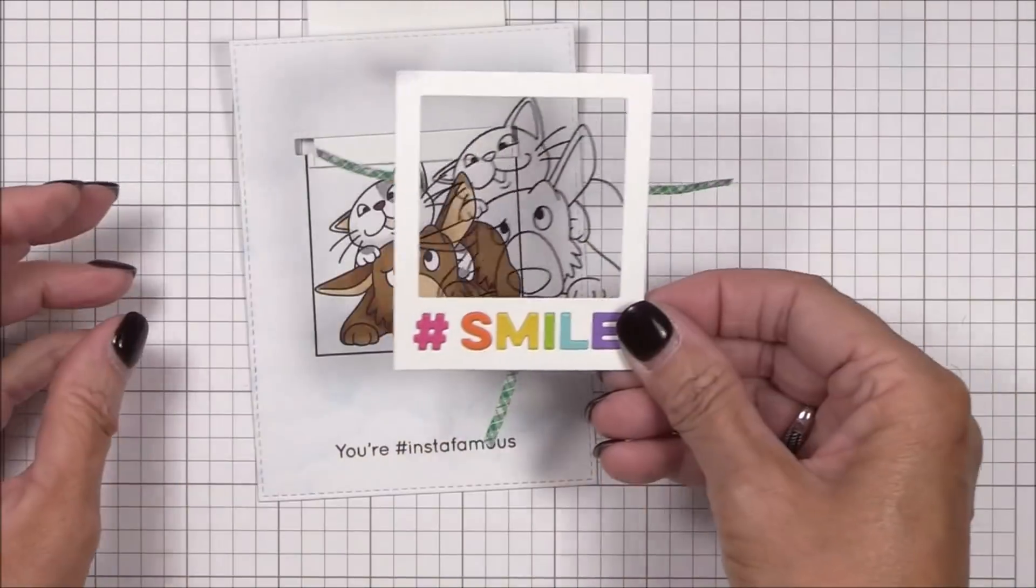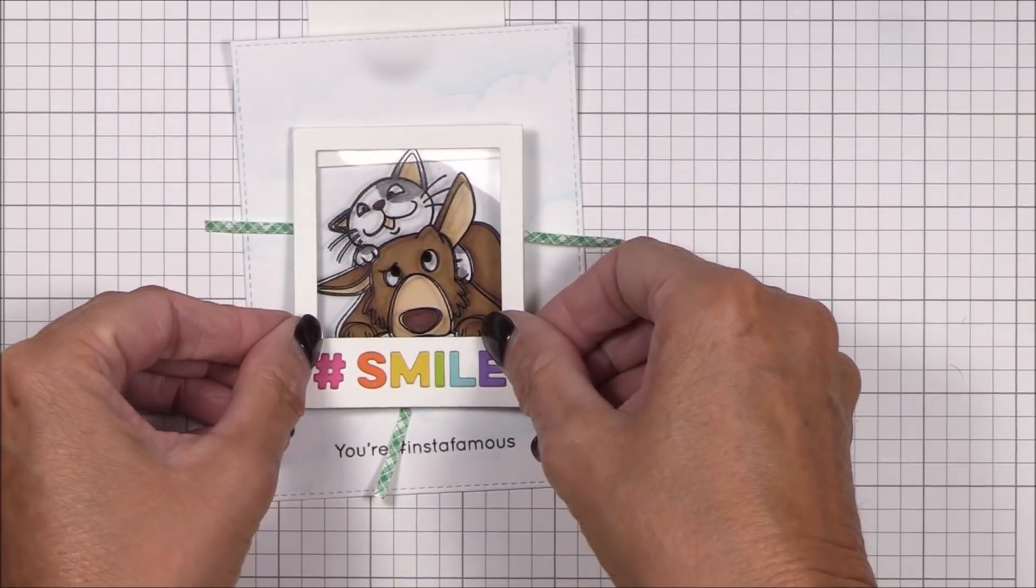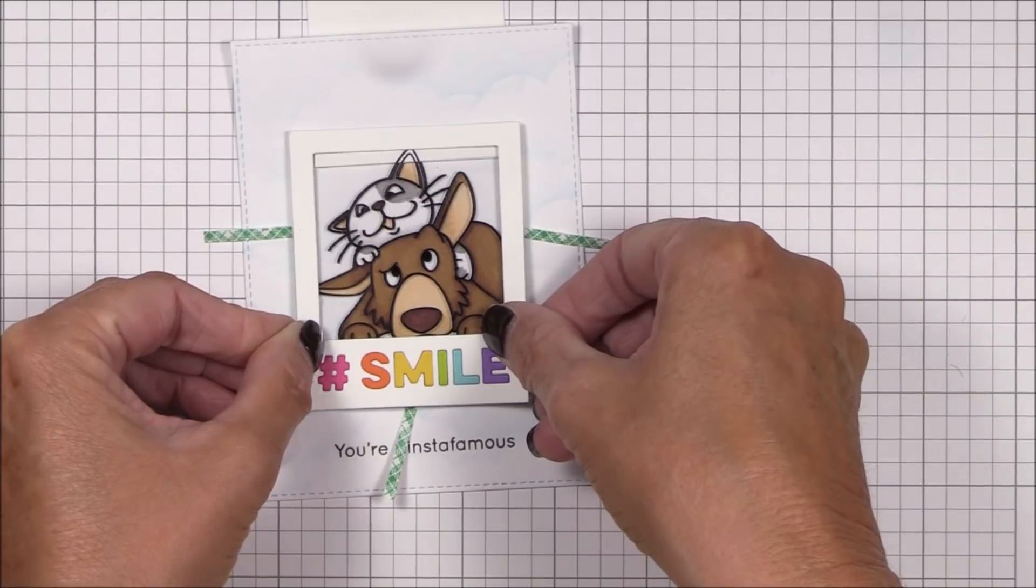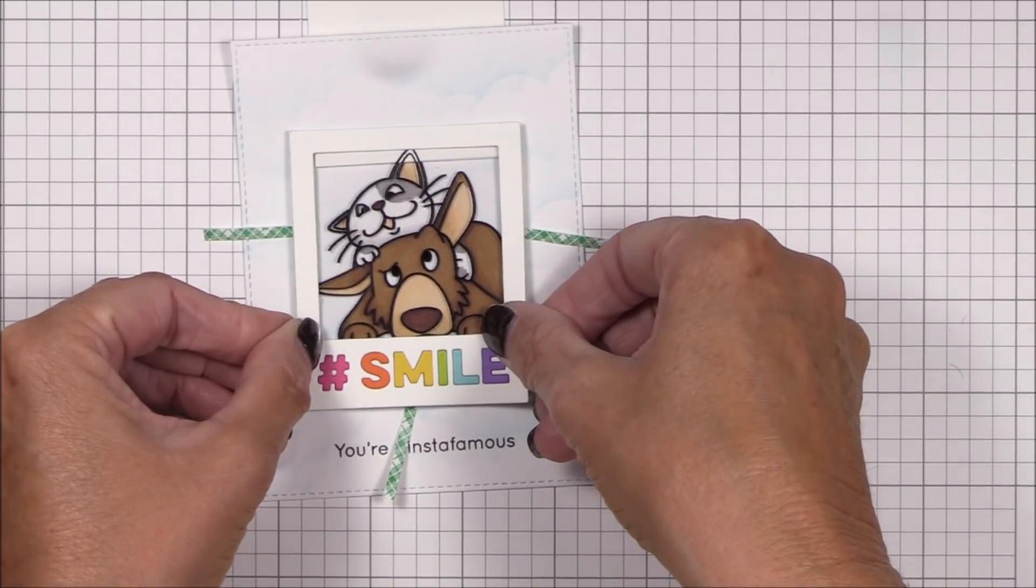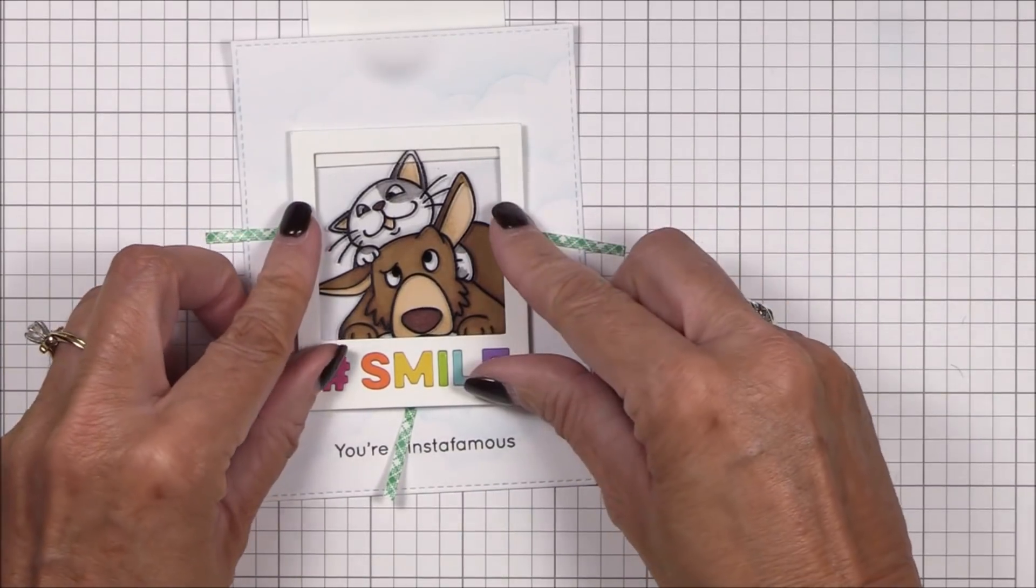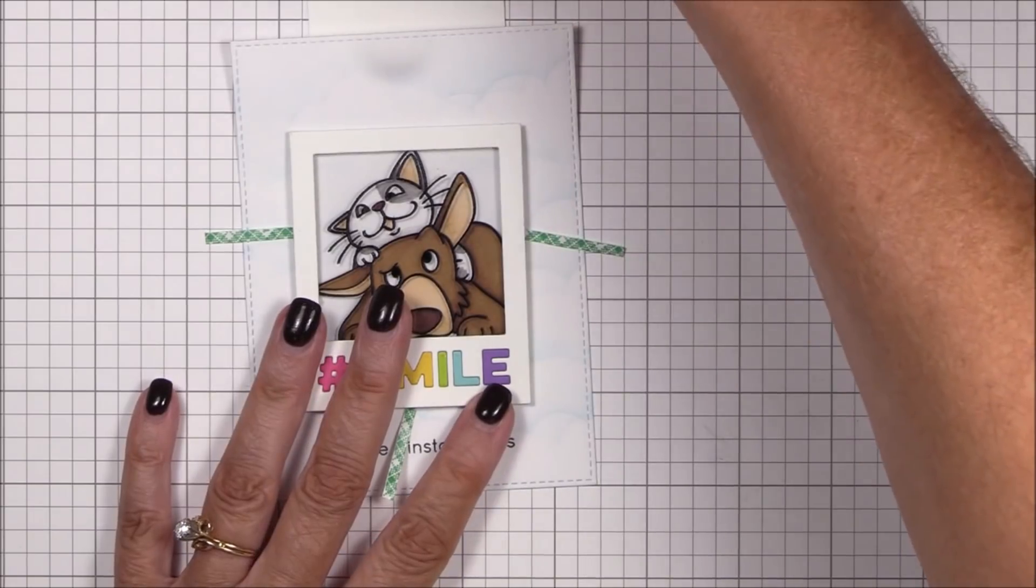I'm sliding the slider panel through the slot so that I can adhere the Polaroid frame to the image panel. I've adhered some one-eighth inch foam tape to the sides and bottom of the Polaroid frame, and I've pulled the release paper off halfway to give me a little wiggle room while I adhere it to the image panel. I want those two images to align perfectly.